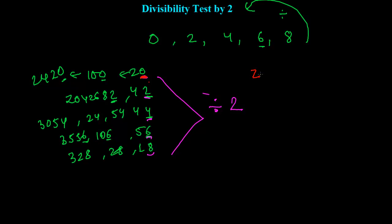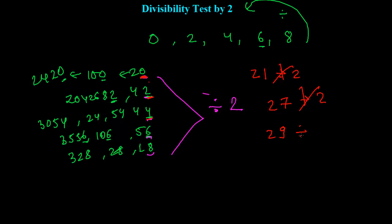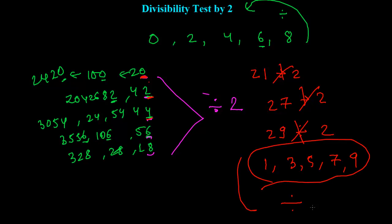If the last digit is not one of those, then the number is not divisible by 2. For example, if the ones place is 1, like 21, it's not divisible by 2. Similarly, 27 is not divisible by 2. If the last digit is 1, 3, 5, 7, or 9, then the number is not divisible by 2. So 13 is not divisible by 2 — since 3 is in the ones place, it's not.